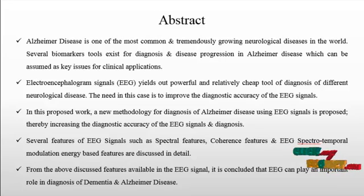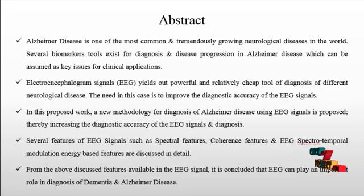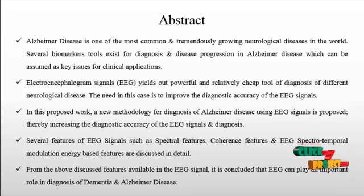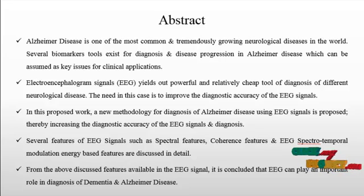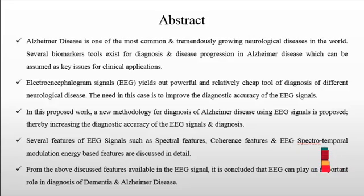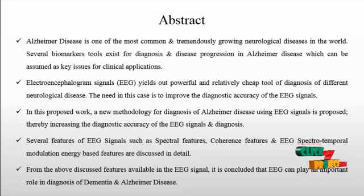By increasing the diagnosis accuracy of EEG signal, several features such as spectral features, coherence features, and EEG spectral-temporal modulation energy-based features are described in detail. From the above-discussed features, it is concluded that EEG can play an important role in diagnosis, dementia detection, and analysis of the process.